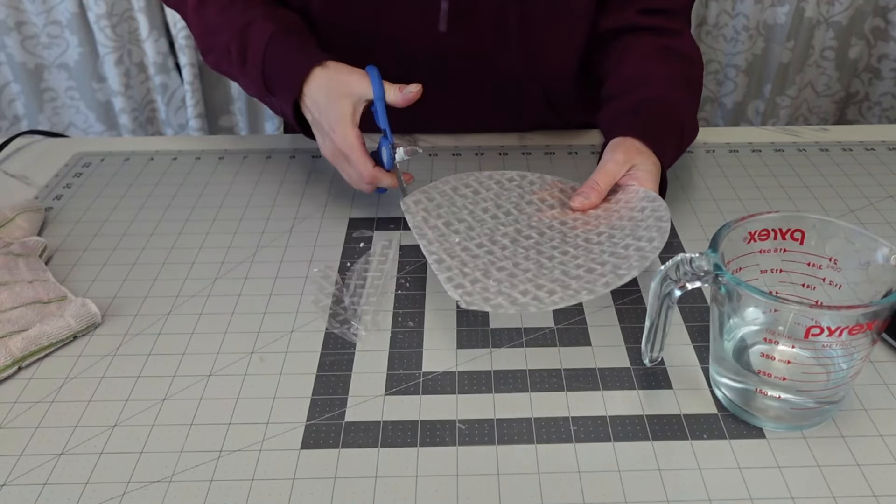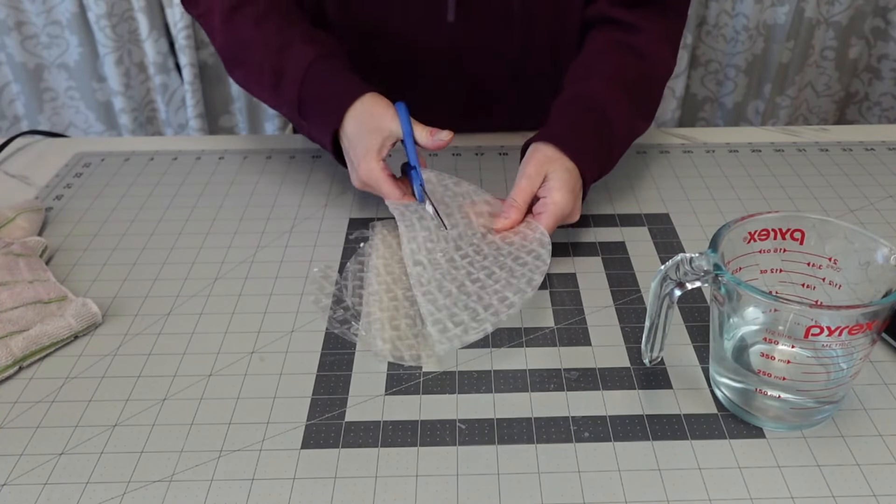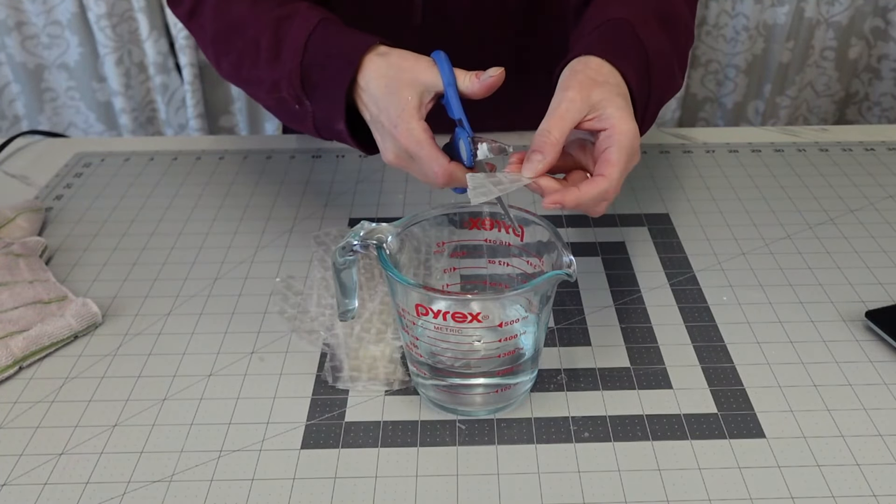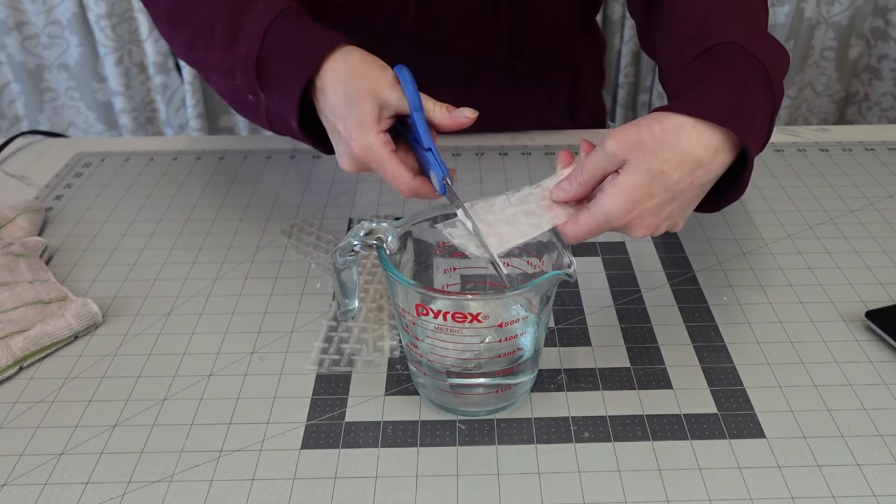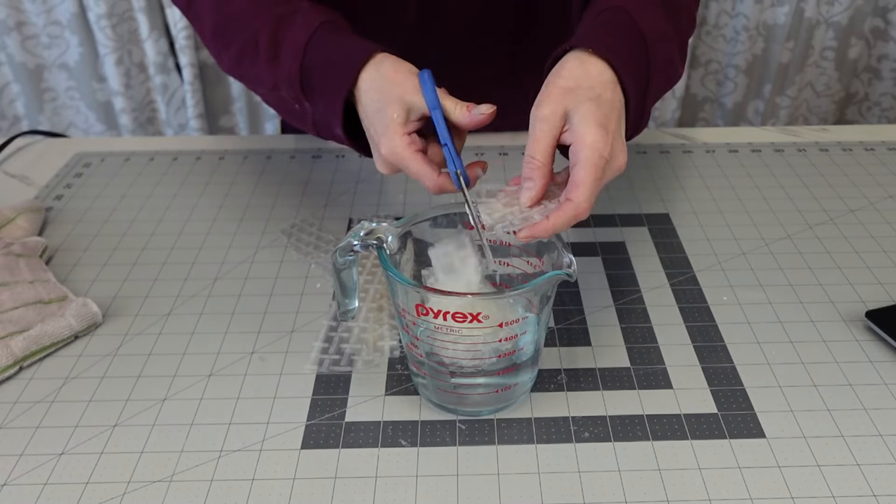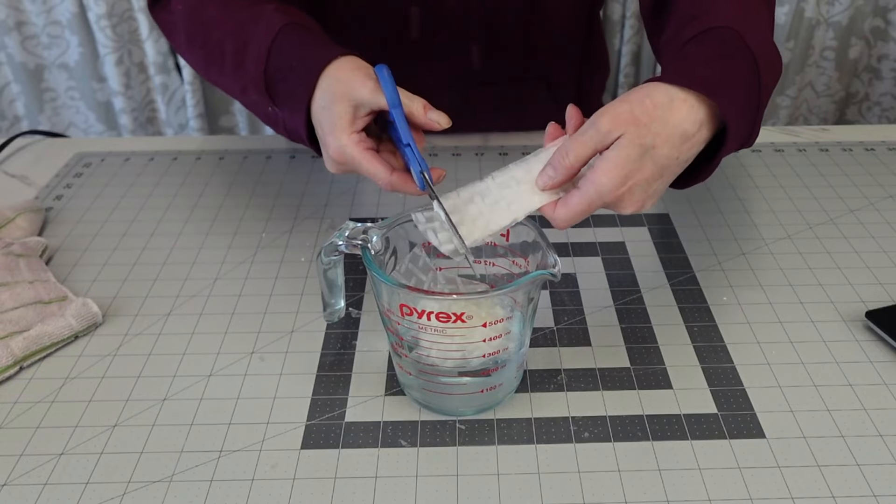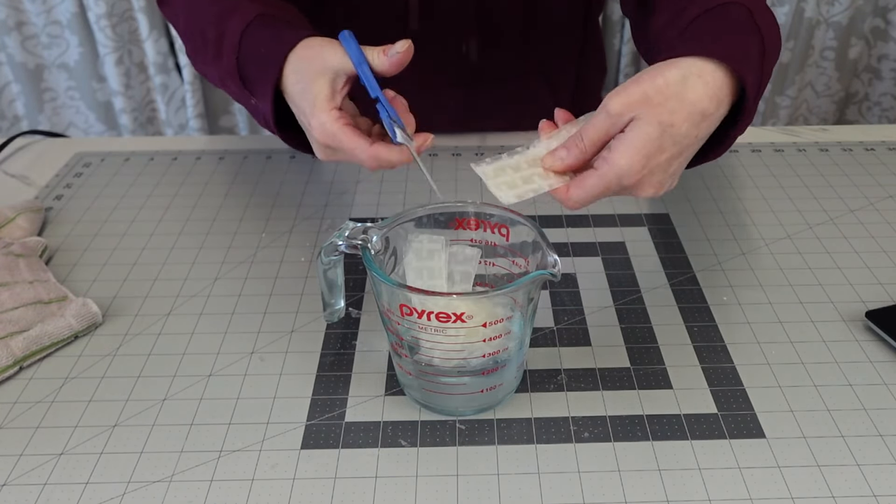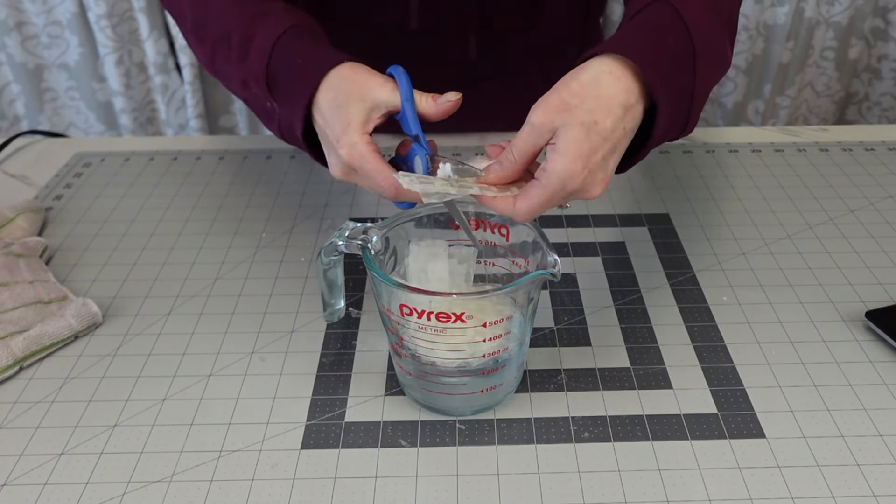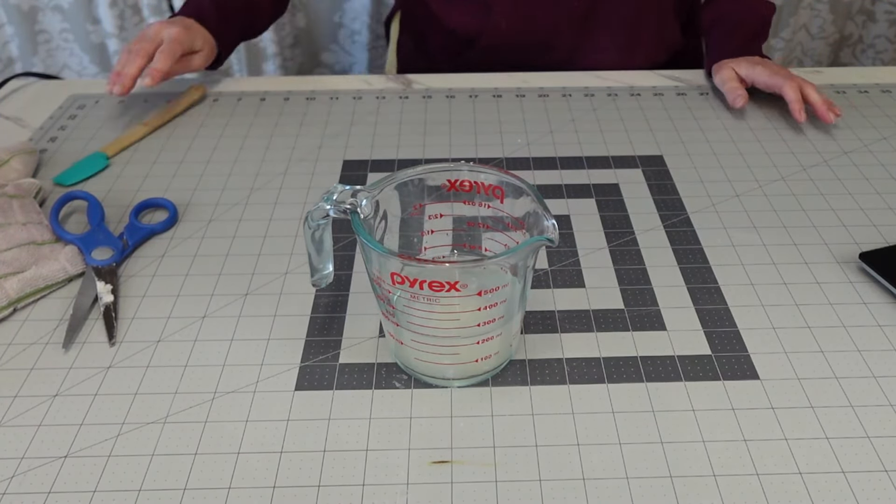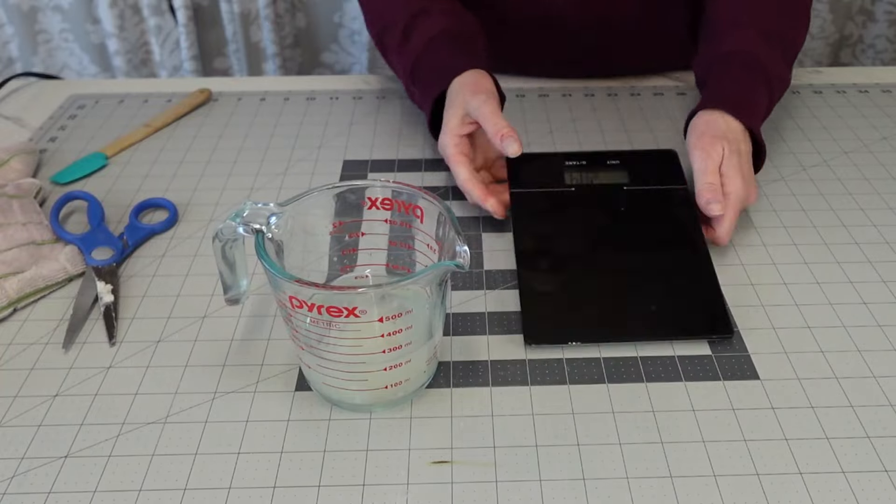And I set those aside to dry. And now I'm making my edible crinoline using the rice paper instead of the wafer paper. And guys, I'm telling you, I actually like this better. I really do. And all I'm doing is I am submerging the pieces of rice paper in water, just regular water and just leaving it for about 10 minutes.